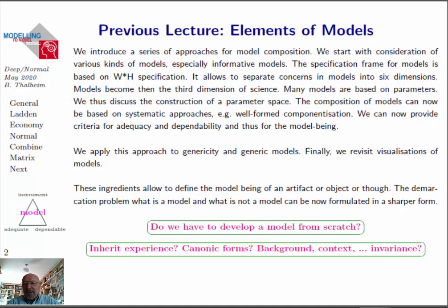Last lecture we considered elements of models. Elements of models are typically basic elements, complex elements, maybe parameters — so we are using a parameter space. For specification we use something like WH specification, and for parameters we can use some kind of synergetic theory or systematic approaches. We can use all the components, that means abstract parameters. We started with a consideration of informative models and applied it to different kinds of modeling approaches, especially using generic models as a convenient way to construct a model from what we have already abstracted from our experience.